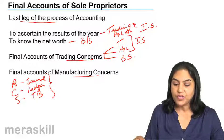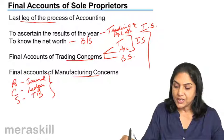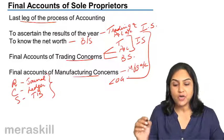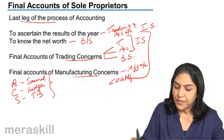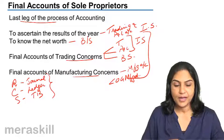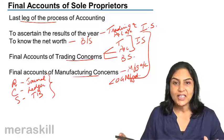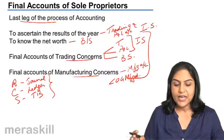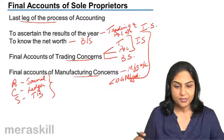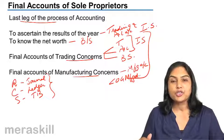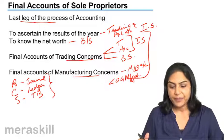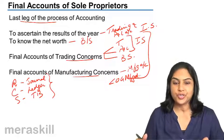In case of the final accounts of manufacturing concerns, in addition to the trading account, profit and loss account, and balance sheet, we first prepare a manufacturing account to find out the cost of goods manufactured. So the final accounts of sole proprietors consist of the income statement and the position statement. For manufacturing concerns, we also have a manufacturing account, which tells us the cost of goods produced during the year.